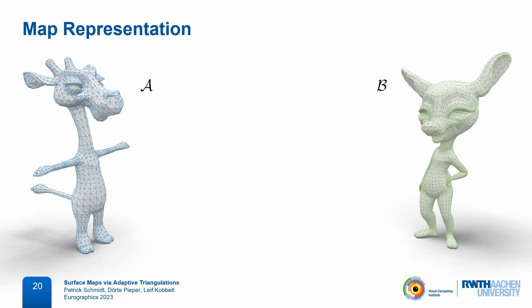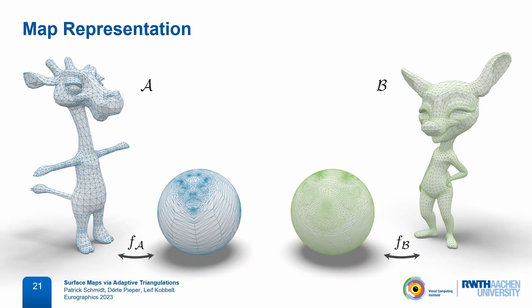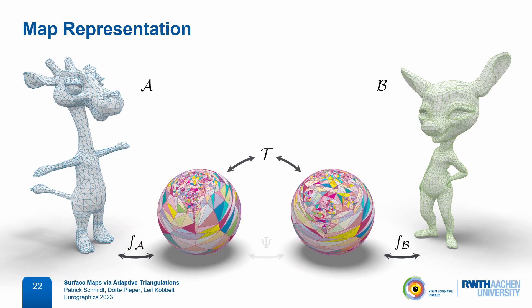Here is our map representation for a pair of genus zero triangle meshes A and B — we will later extend this to more than two surfaces. First we independently compute two maps to the sphere; both of these are bijective and will remain fixed. Most previous methods would now directly compose them to a map between A and B, but instead we bring them into correspondence via a third triangulation T — an abstract triangle mesh that has geometric embeddings on both spheres, defining a piecewise map between them, and we can compose these three maps to a homeomorphism between A and B.